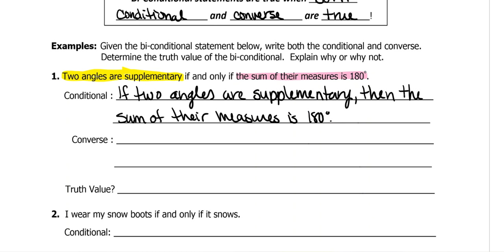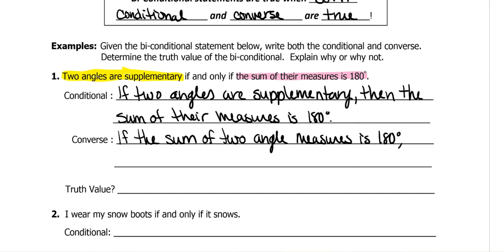For the converse, we do the pink first and then the yellow. You still start with 'if,' but then you write the pink. Instead of writing 'the sum of their measures,' we typically want to state nouns before pronouns — 'their' means two angles. So: 'If the sum of two angle measures is 180 degrees, then they are supplementary.'